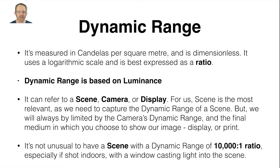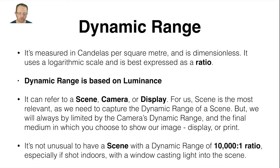Let's explain dynamic range. It's measured in candelas per square meter and is dimensionless. It uses a logarithmic scale and is best expressed as a ratio — from our point of view we're going to stick to ratios. Dynamic range is based on luminance, not colour but on luminance. It can refer to a scene, camera, or display. For us, scene is the most relevant as we need to capture the dynamic range of a scene, but we will always be limited by the camera's dynamic range and the final medium — display or print.